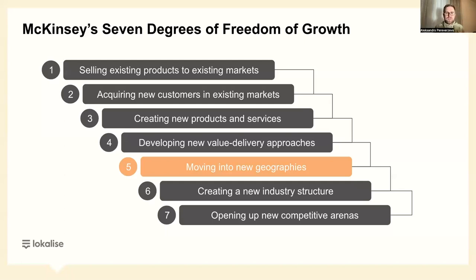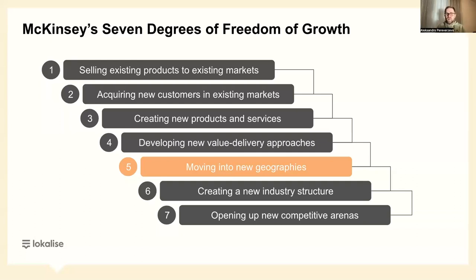Looking through the lens of the seven points: first, selling existing products to existing customers — target users who registered with a company email but use the personal plan, and try to upgrade them to the team plan for business use. Second, acquiring new customers in existing markets — target the same cohort by offering a personal pro plan if they encourage use within their organization by inviting five users to try the team plan.